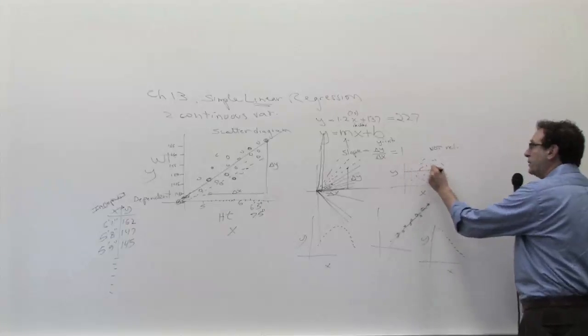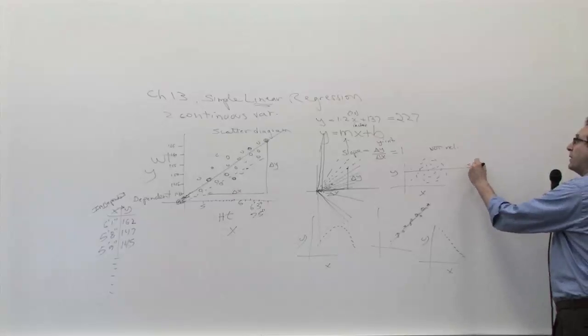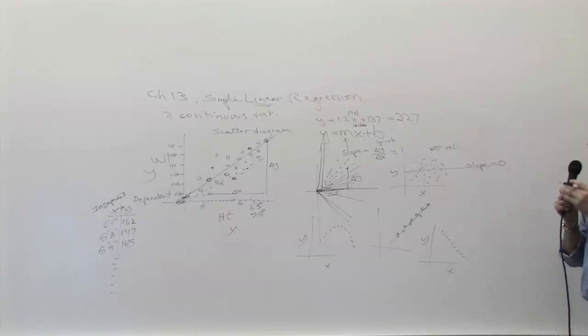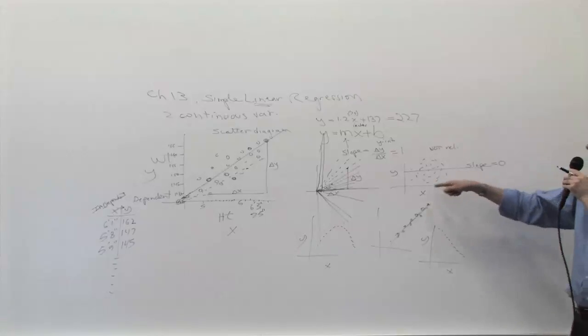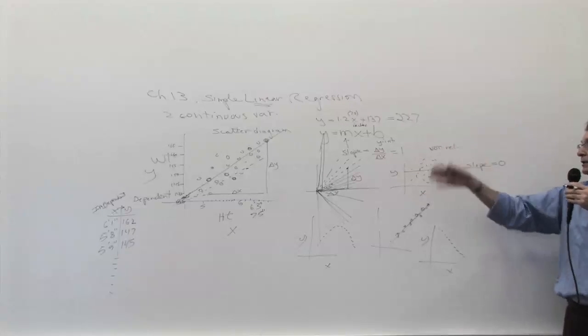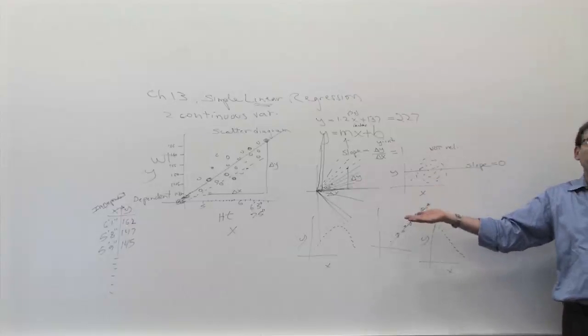The answer is a horizontal line, because with a slope of what? What's the slope of a horizontal line? Zero. Because what does the horizontal line mean? It means that if the x gets bigger, the y doesn't move. Well, if the x and y are not related, that's exactly what's going to happen. If the x gets bigger, the x gets smaller, the y is not going to be affected by that.